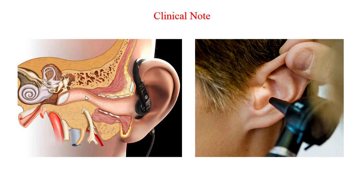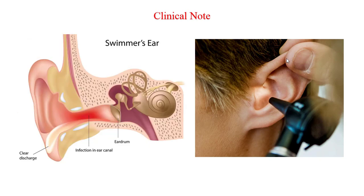An important clinical note associated with the external acoustic meatus: this structure does not follow a straight course. Observation of the external acoustic meatus and tympanic membrane in clinical examination requires a special tool known as an otoscope, and can be improved by pulling the ear superiorly, posteriorly, and slightly laterally. This examination is very important in cases of external otitis, or as it is widely known, swimmer's ear — a painful condition resulting from infection in the external acoustic meatus, which happens often to swimmers.